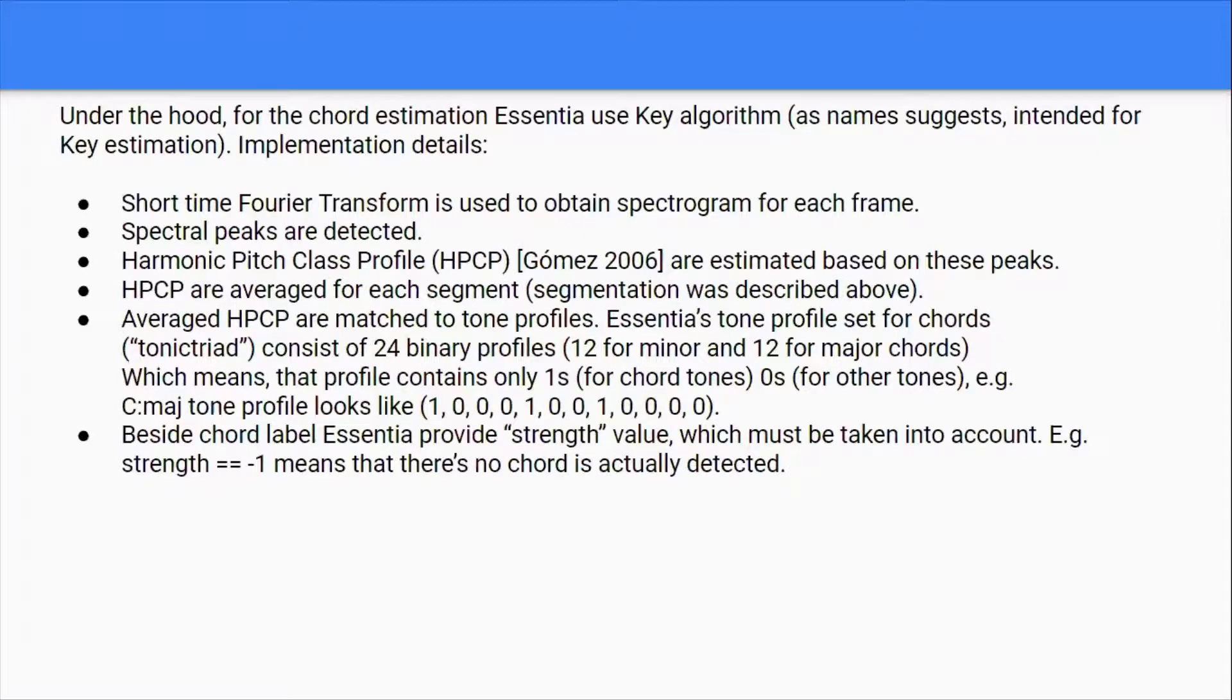Under the hood for chord estimation, Essentia uses a key algorithm. A short-time Fourier transform is obtained, then for each frame of audio input, spectral peaks are detected. Then harmonic pitch class profiling happens on these particular peaks. These harmonic pitch class profiles are averaged for each segment, and the average harmonic pitch class profiles are then matched to tone profiles. Essentially, the tone profile set of chords consists of 25 binary profiles.